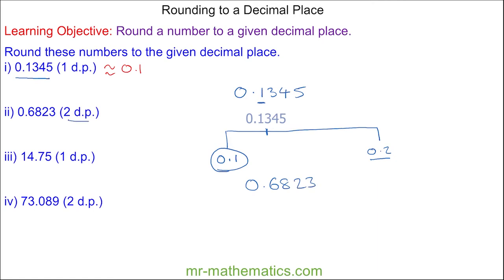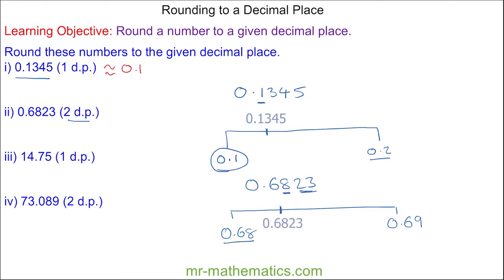For question two we have 0.6823 to the second decimal place, which in this case is the eight, so 0.6823 is between 0.68 and 0.69. The two and three tell you it is closer to 0.68 than it is to 0.69, so this becomes approximately 0.68 to two decimal places.